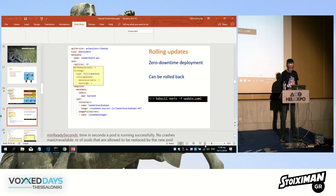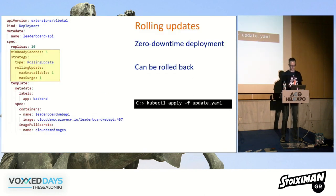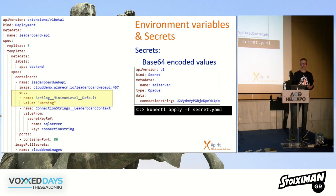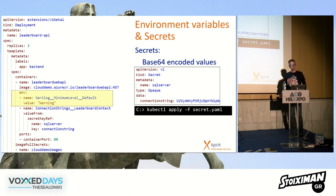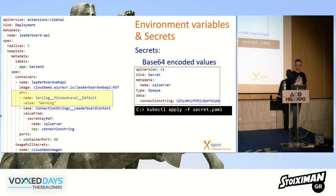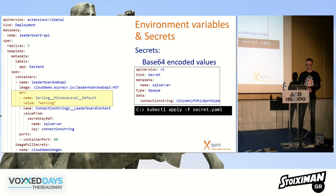When you move Docker containers between environments, they often need specific environment variables — for example, a connection string to a different database, or a different log level. With Docker images you specify these via environment variables, and you can do the same in a Kubernetes deployment. Environment variables appear in clear text in the YAML file.